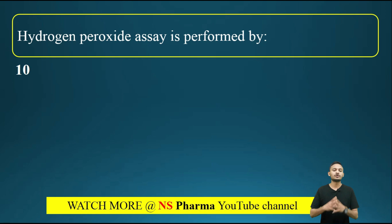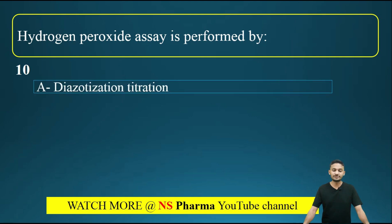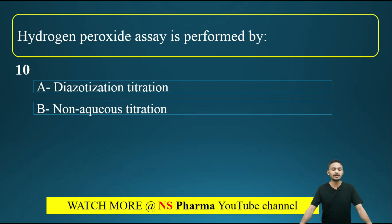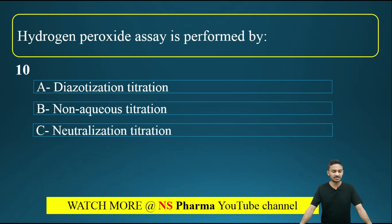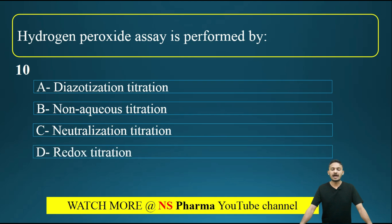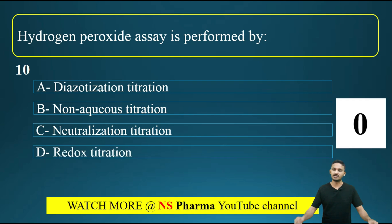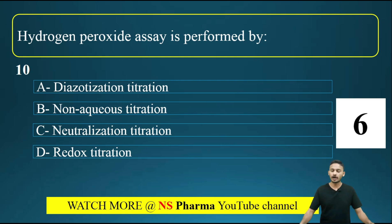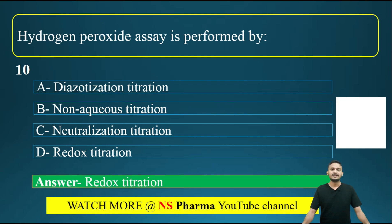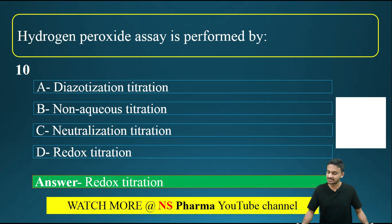Question number 10: hydrogen peroxide assay is performed by? Options are: option A, diazotization titration; option B, non-aqueous titration; option C, neutralization titration; option D, redox titration. The correct answer is option D, that is redox titration. Hydrogen peroxide assay is performed by redox titration.